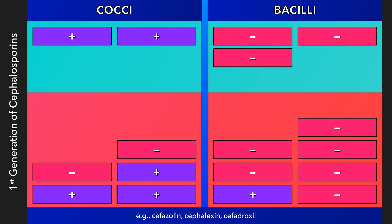Now we will begin with the first generation of cephalosporins. At the bottom of the screen are a few representative antibiotics. The first generation is effective against most gram-positive cocci, including aerobic streptococcal species and methicillin-sensitive staphylococcus aureus. Cephalexin is an oral first-generation cephalosporin. Like the anti-staphylococcal penicillins, it is an excellent choice for skin and soft tissue infections such as uncomplicated cellulitis, when the suspected pathogen is streptococcus or a susceptible strain of staphylococci — in this case, not MRSA.